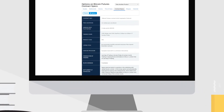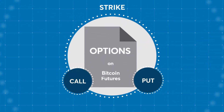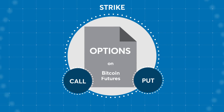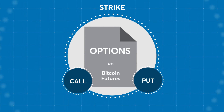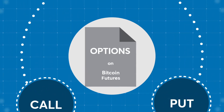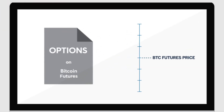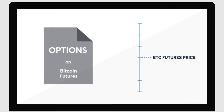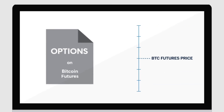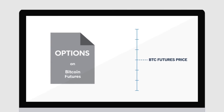Now let's discuss the strike prices of options on Bitcoin futures. An option's strike is the price at which a call owner can purchase or a put owner can sell the underlying futures contract. Multiple strike prices will exist with the same expiration date. This set of strike prices is referred to as the strike range. The strike range extends above and below the current futures price so that risk can be managed whether the futures price increases or decreases.